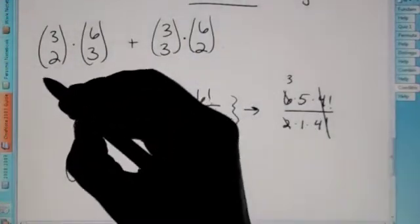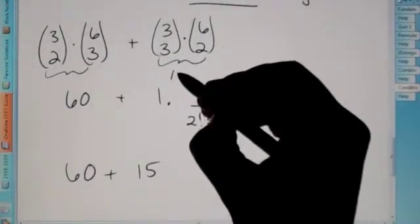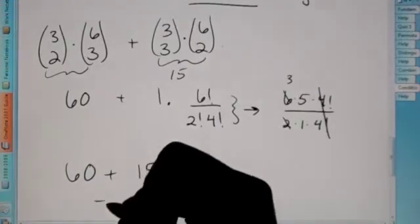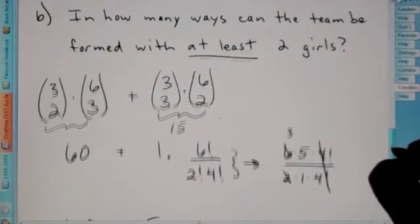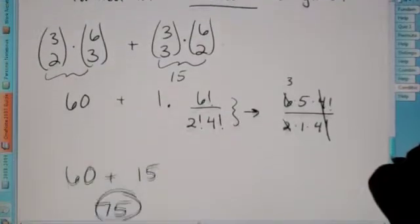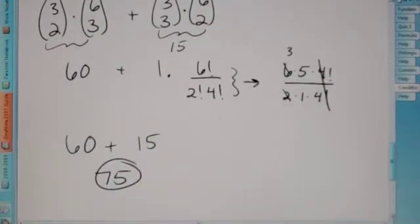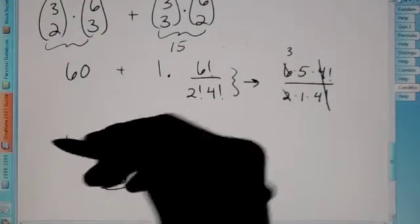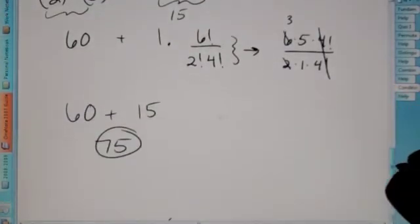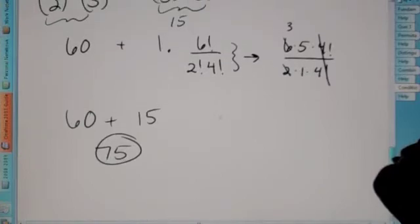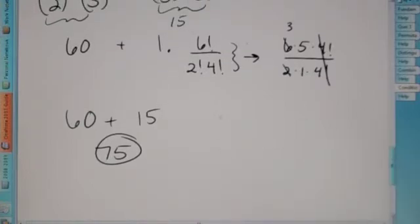So again, this makes 60. This makes 15. Giving our total answer to be 75. How many ways can the team be formed with at least two girls? There's 75 different ways. Because we could have two girls and three guys, or three girls and two guys. So we have to add up our answers there. So good luck with that. These are conditional combinations. Good luck.